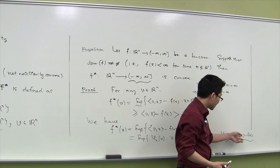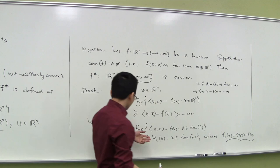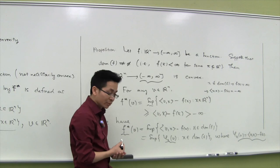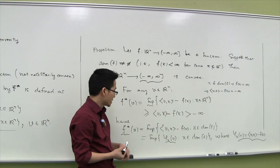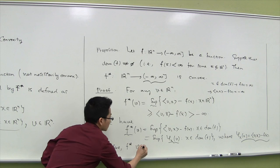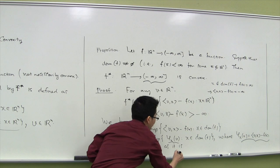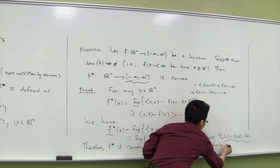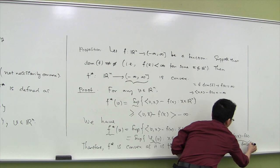This can be written as the supremum of a family of functions φ_x(v), where x runs in the domain of f, and φ_x(v) = ⟨v,x⟩ − f(x) is an affine function in v — here f(x) is just a constant. Therefore, f* is the supremum of a family of convex functions. We already know that the supremum of a family of convex functions is always convex. Therefore, f* is a convex function, and the proof of this proposition is complete.